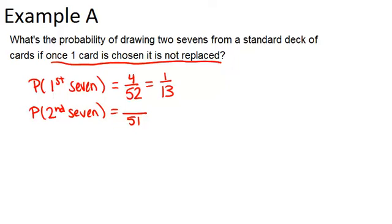And assuming we did get a seven on the first try, it means that there are only three sevens left in the deck, as opposed to four what there were originally. So the top number in our fraction will be three. So the probability of the second seven is 3 out of 51.